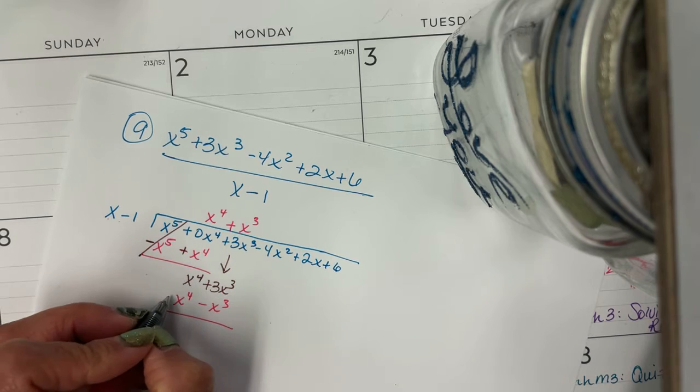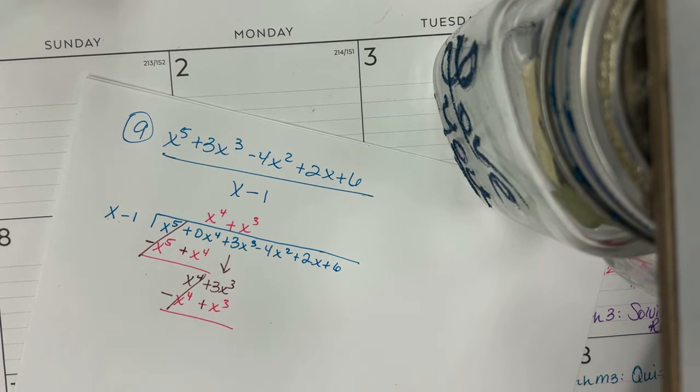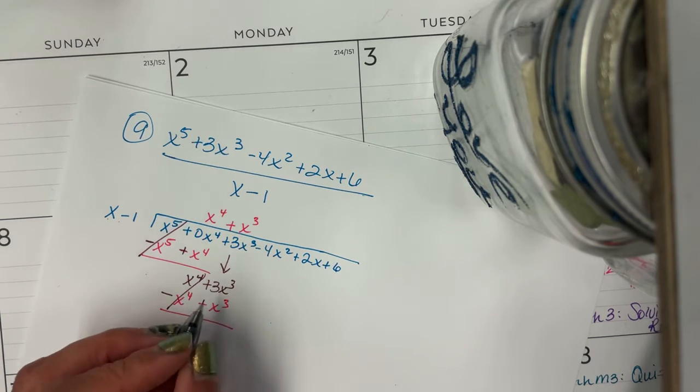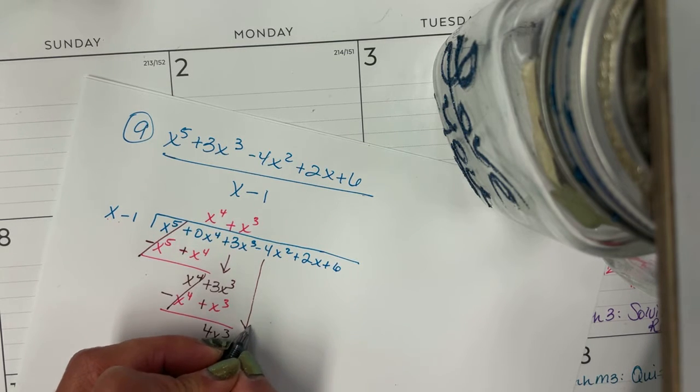And then we have to do the sign change because we've got to subtract. Those first terms will always cancel, or they should always cancel. And 3x to the third plus 1x to the third is 4x to the third. Bring down the next term and do it again.